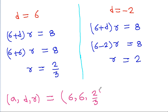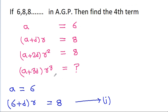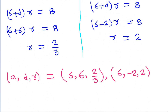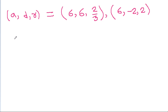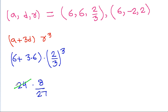With A = 6, D = 6, and R = 2/3, the fourth term is A + 3D·R³ = 6 + 3×6 × (2/3)³ = 6 + 18 × 8/27 = 24 × 8/27. Simplifying, 3×8 = 24 and 3×9 = 27, so we get 64/9.